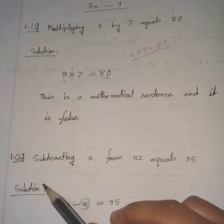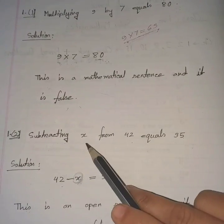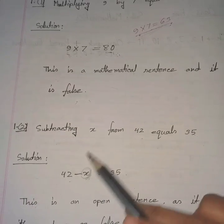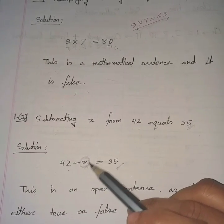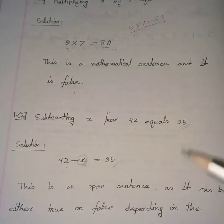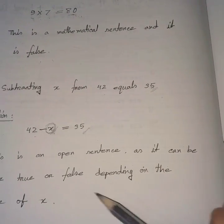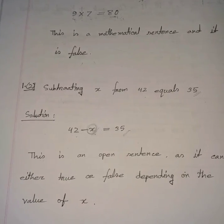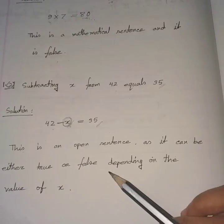Now the second one: subtracting x from 42 equals 35. We write 42 − x = 35. Since there is a letter symbol x, it is an open sentence. We should write: this is an open sentence as it can be either true or false depending on the value of x.